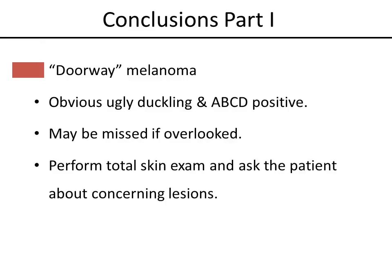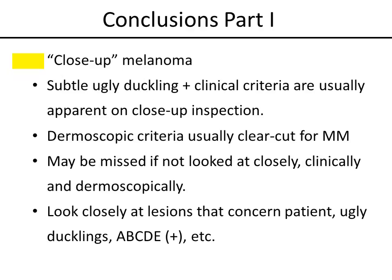To conclude part one: doorway melanomas are obvious ugly ducklings fulfilling many of the ABCD criteria, and therefore easy to diagnose even from far. However, they may be missed if overlooked, so the solution is to perform total body examination head to toe and ask the patient about any concerning lesions they are aware of. The second level of difficulty are close-up melanomas — not obvious from the doorway, but subtle ugly ducklings deviating somewhat from other patient lesions. When we look closely at them clinically and dermoscopically, more criteria of melanoma become apparent. These melanomas may be missed if we don't look at them closely, so the solution is to examine closely any lesions that concern the patient, those that are ugly ducklings, and those showing any of the ABCD criteria. Thank you for your attention.